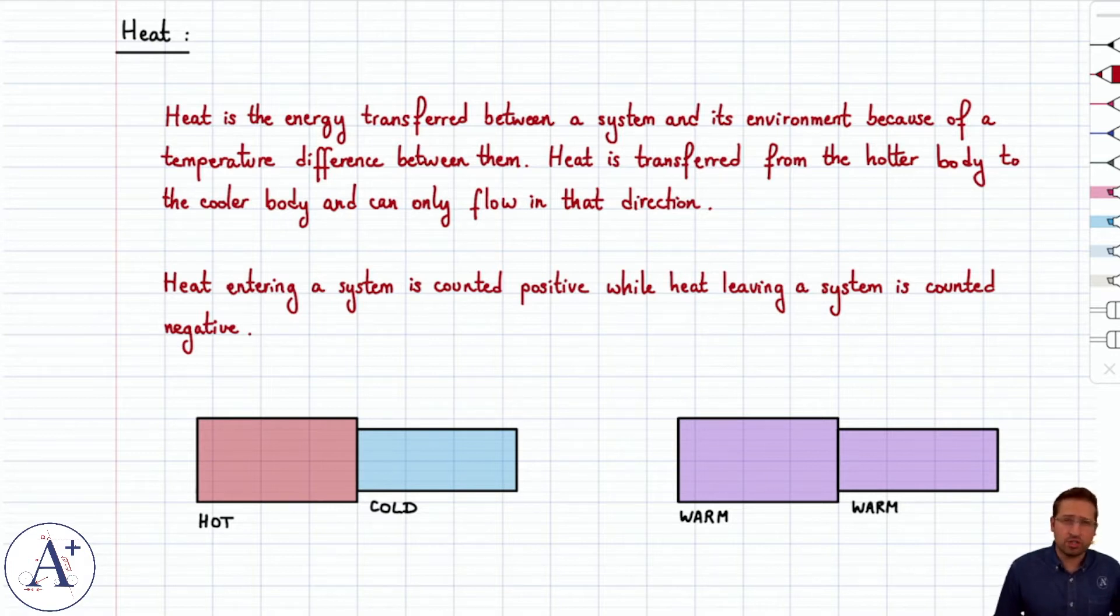Heat is the energy transferred between a system and its environment because of a temperature difference between them. Heat will always be transferred from the hot body to the cold body and can only flow in that direction, from hot to cold.